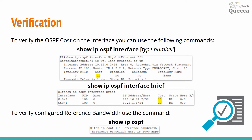To verify the OSPF cost on an interface, you can use the following commands. The first one is show ip ospf interface followed by the specific interface name — in the output you can find the OSPF cost value. The other command is show ip ospf interface brief, where you can see costs for all your interfaces.